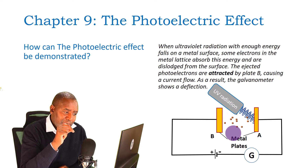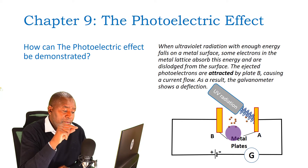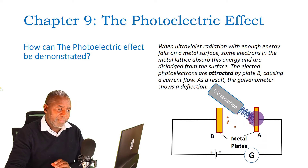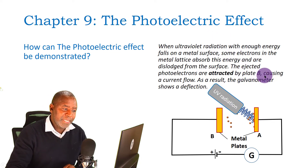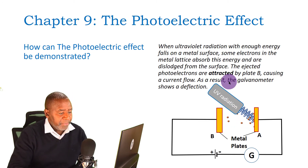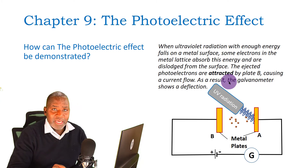The ejected photoelectrons are attracted by plate B. You must be careful about how you connect the dry cell — always connect the negative plate as the one irradiated with electromagnetic radiation. When electrons are attracted by plate B, it causes current to flow and the galvanometer shows a deflection. This simple experiment shows photoelectric effect: if you switch off the lamp, the galvanometer does not deflect, showing no more electrons are being produced; switch it on and the deflection returns.